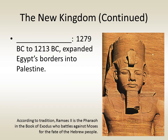Another important New Kingdom pharaoh was Ramses II. He ruled from 1279 BC to 1213 BC and expanded Egypt's borders into Palestine. According to tradition, Ramses II is the pharaoh in the Book of Exodus who battles against Moses for the fate of the Hebrew people.